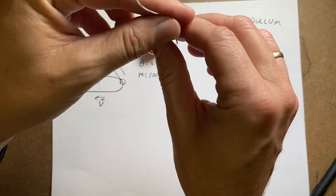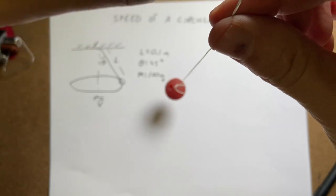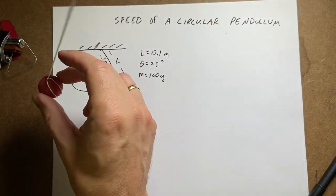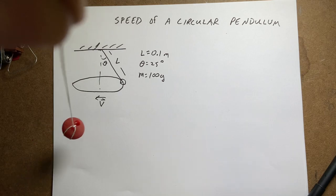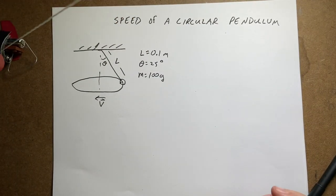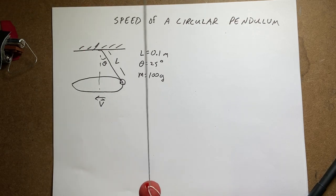A circular pendulum is where I hold it up here. Let's see if I can do this. And now instead of going back and forth I'm going to go in a circle. That's not a circle. Like this. That's too big. There you go. You get the idea.